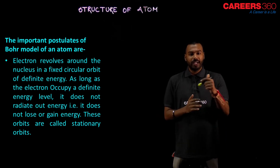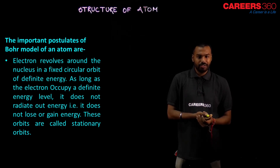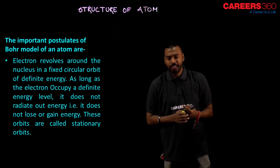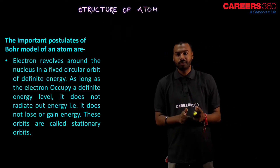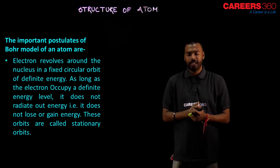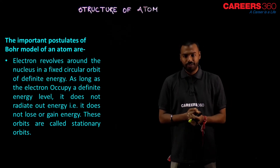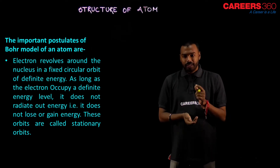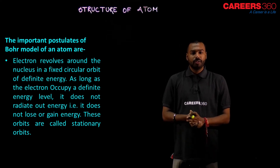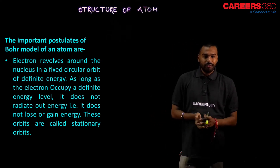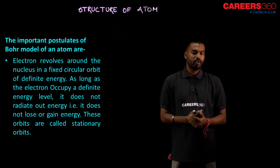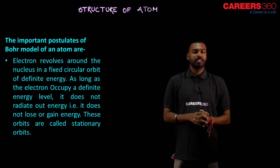The electron is not hitting the nucleus, not emitting any energy while revolving, and it revolves in a stationary orbit. As the slide reads: 'Electron revolves around the nucleus in a fixed circular orbit of definite energy. As long as the electron occupies a definite energy level, it does not radiate out energy — it does not lose or gain energy.' These orbits are called stationary orbits.